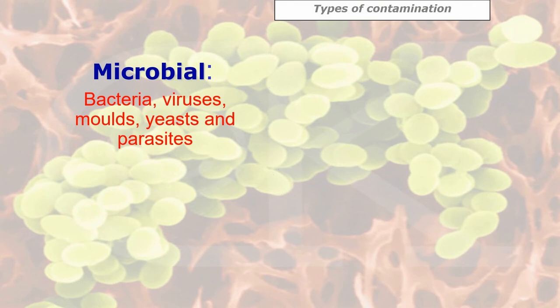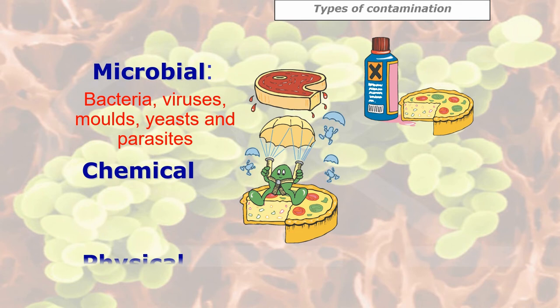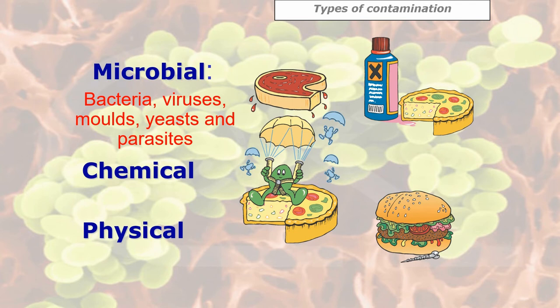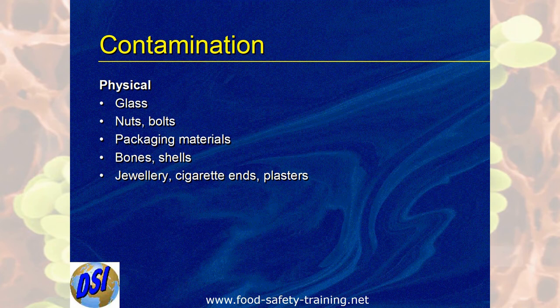Let's look at the types of contamination. First, microbial contamination — caused by microscopic organisms: bacteria, viruses, moulds, yeast, and parasites. These are impossible or very difficult to see. Then chemical contamination. Then physical contamination — items you can see, such as a screw or something like a piece of plastic or string, which are food safety hazards. And lastly, allergenic contamination — for example nuts, casein, soy, or any of the 14 allergens.